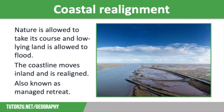Sometimes decisions are made to stop holding the line against coastal erosion and flooding — i.e. to stop protecting the coastline. This usually happens when the land is not considered economically valuable enough to protect, so nature is allowed to take its course and low-lying land is allowed to flood. People are moved out, homes and buildings are knocked down, and a breach is made in the existing defences so seawater can flood the low-lying land.